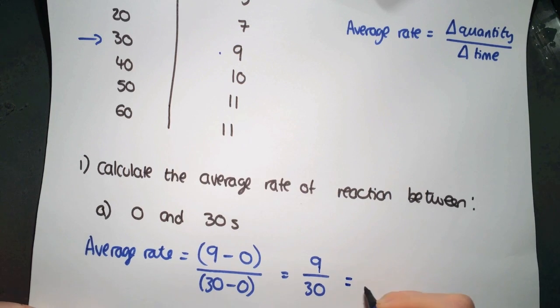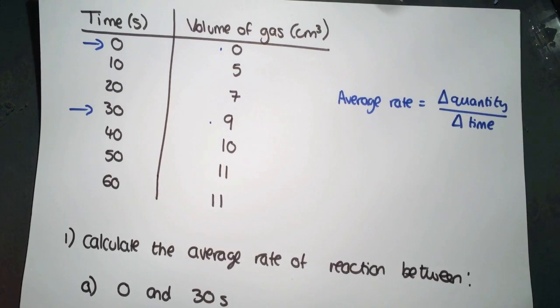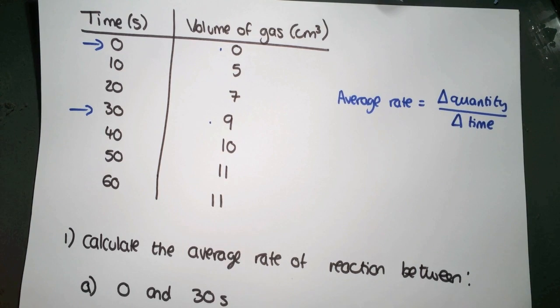which will overall give us an average rate of 0.3. This is where you have to have a look and see what units you've been using. So we've been using centimeters cubed, and that's per second. So that's s to the minus 1.